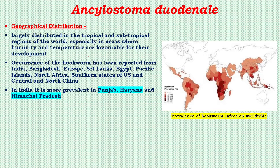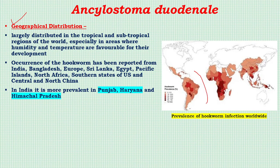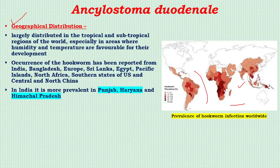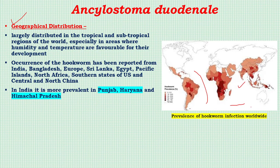Regarding geographical distribution, Ankylostoma duodenale is largely distributed in tropical and subtropical regions of the world, especially in areas where humidity and temperature are favorable for development. Occurrence has been reported from India, Bangladesh, Europe, Sri Lanka, Egypt, Pacific Islands, North America, Africa, and southern states of the United States. In India it is more prevalent in Punjab, Haryana, and Himachal Pradesh.